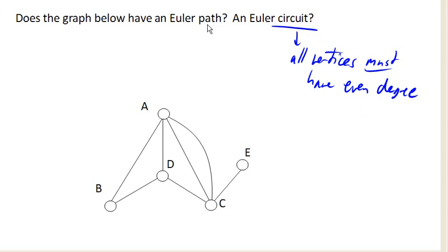For an Euler path, it's similar, except we can have either 0 or 2 odd degree vertices. Otherwise, all the rest must be even degree, for the same reason.